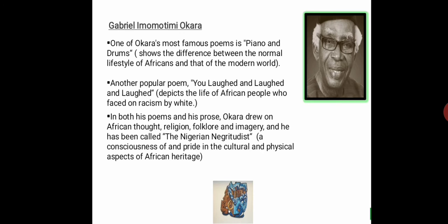One of Okara's most famous poems is 'Piano and Drums,' which shows the difference between the normal lifestyle of Africans and that of the modern world. The piano represents the modern Western world, while the drums represent the traditional African lifestyle. These two instruments symbolize two different cultures and peoples.